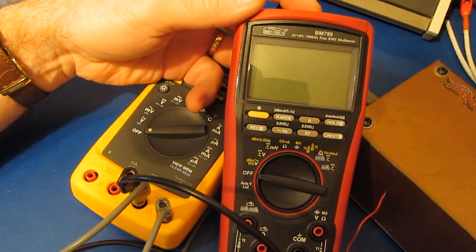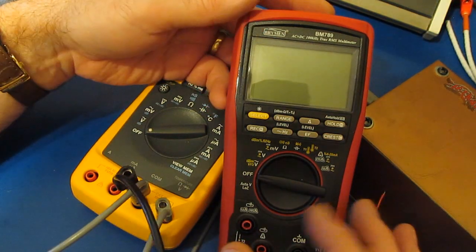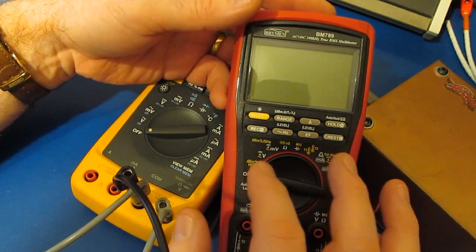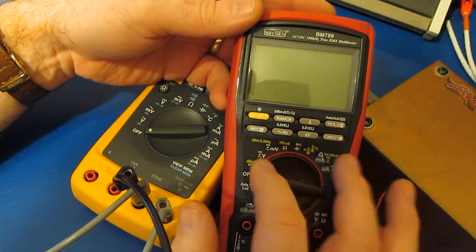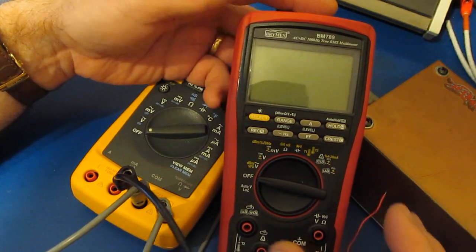On the EV blog we've been having a discussion about the new Brymen BM789. Somebody had purchased one of these and they were essentially overloading the meter in the AC millivolt range. And of course the meter was behaving very strangely.